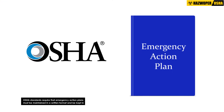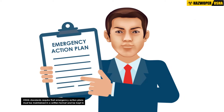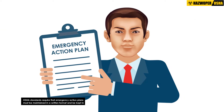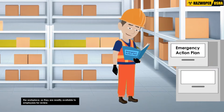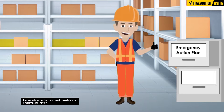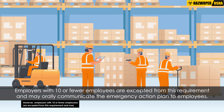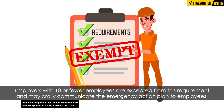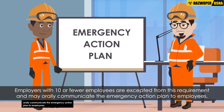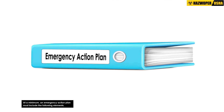OSHA standards require that emergency action plans must be maintained in a written format and be kept in the workplace, so they are readily available to employees for review. However, employers with 10 or fewer employees are excepted from this requirement and may orally communicate the emergency action plan to employees.